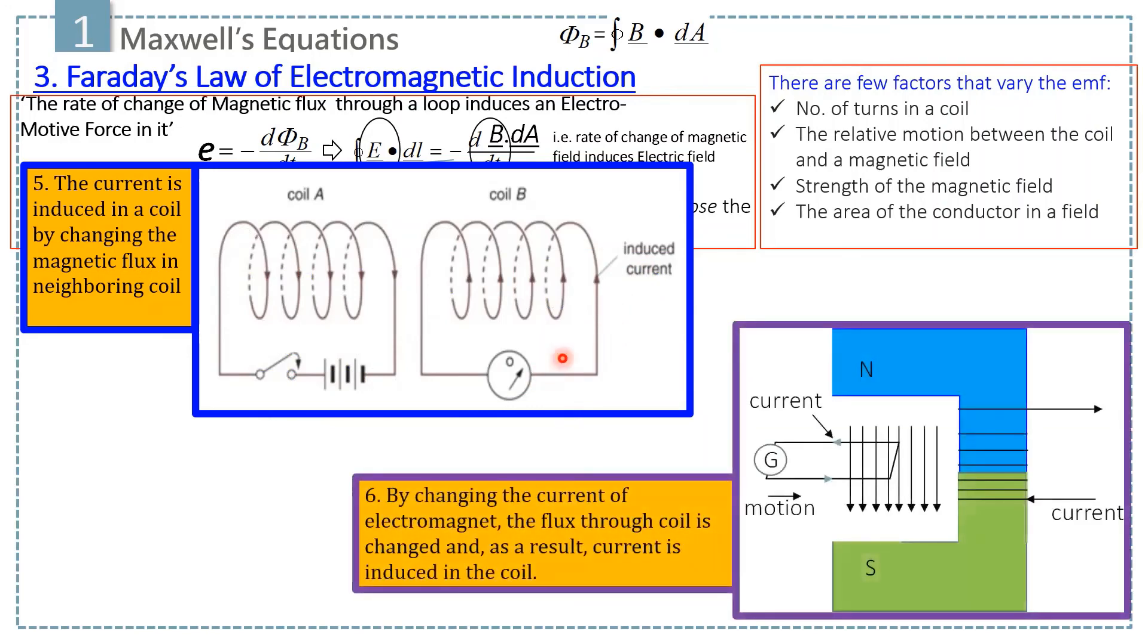And here is the sixth case in which both coil and electromagnet are stationary. But by changing the current of the electromagnet, the flux through coil is changed and as a result, current is induced in the coil.